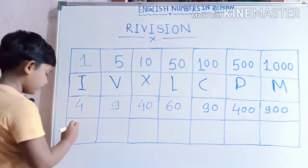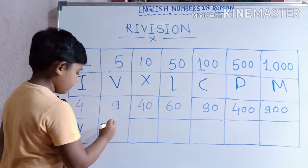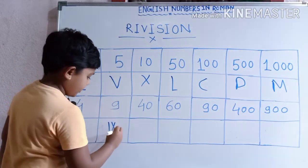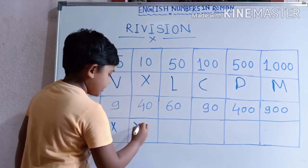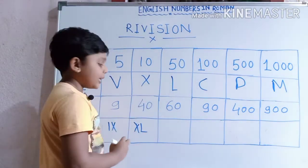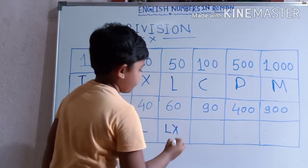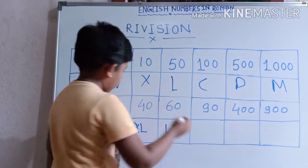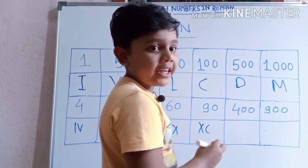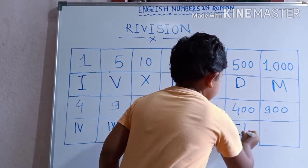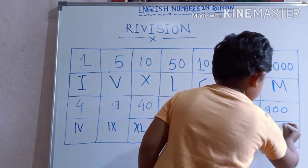4 ke liye: I, V. 9 ke liye: I, X. 40 ke liye: X, L. 60 ke liye: L, X. 90 ke liye: X, C. 400 ke liye: C, D. 900 ke liye: C, M.